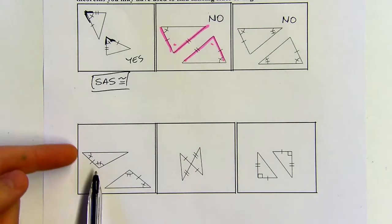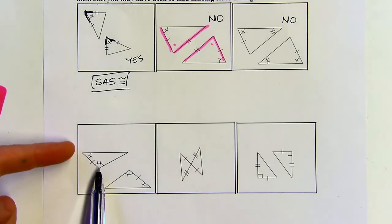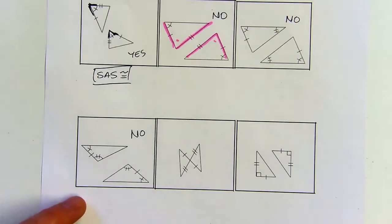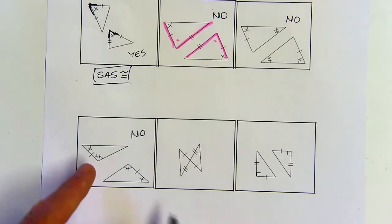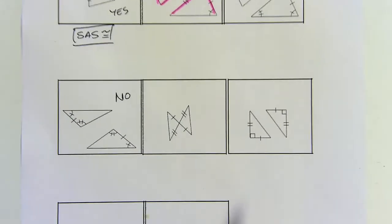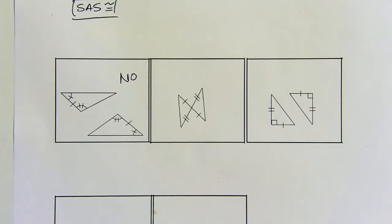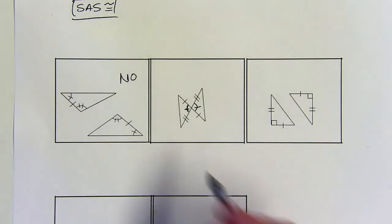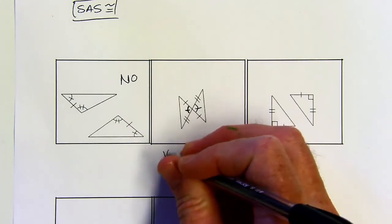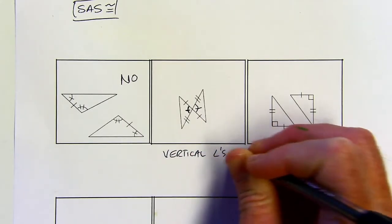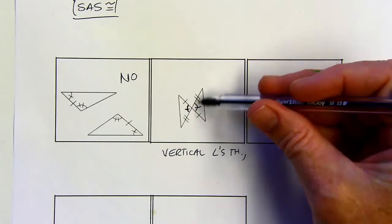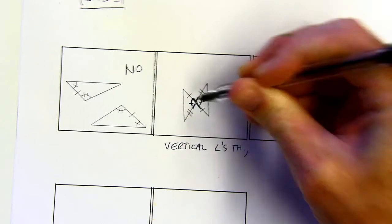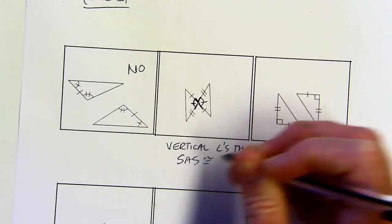Next, I've got two angles and a side — this side is included between the two angles, but it's still two angles and a side, not two sides and an angle, so I can't use SAS here. This one at first glance only has two sides, but wait — we have our bow tie situation! So by the vertical angles theorem, those two angles are congruent. Now I have two sides and an included angle in both triangles, so I can use SAS. Yes.